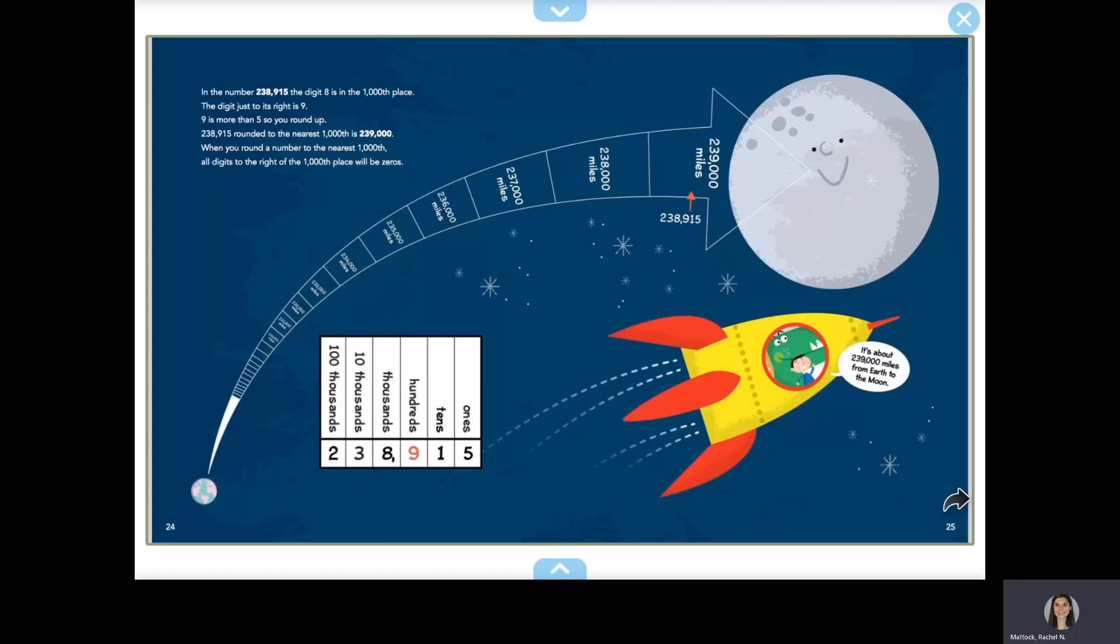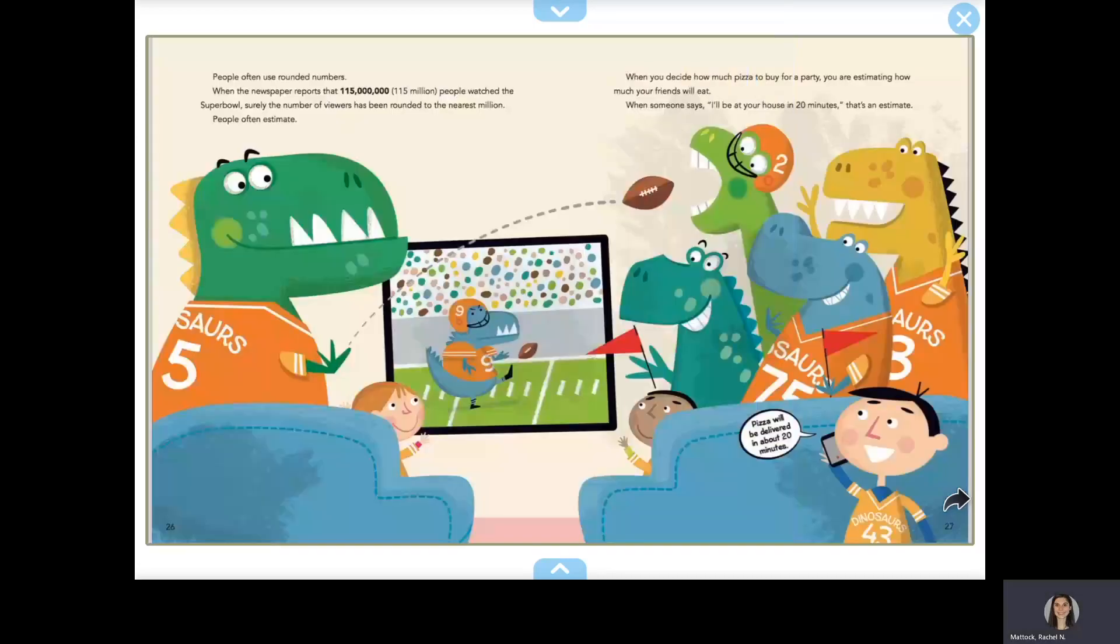When you round a number to the nearest thousand, all digits to the right of the thousands place will be zeros. People often use rounded numbers. When the newspaper reports that 115 million people watch the Super Bowl, surely the number of viewers has been rounded to the nearest million.